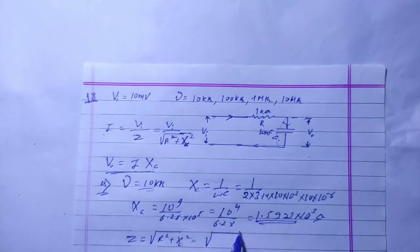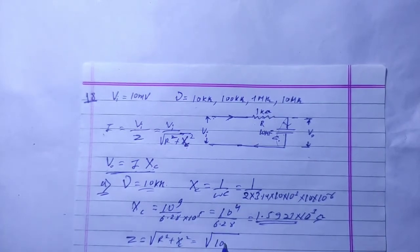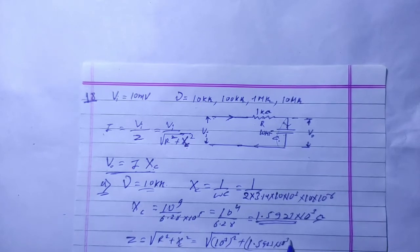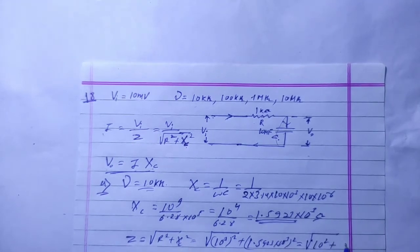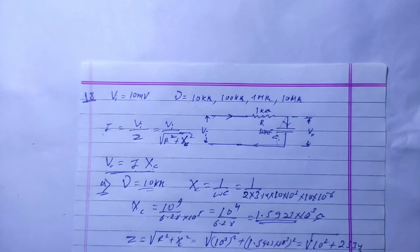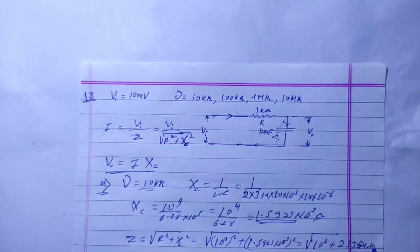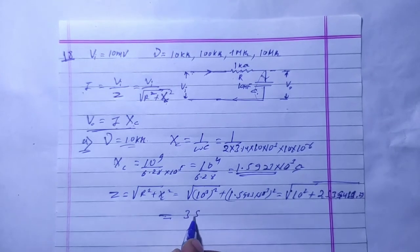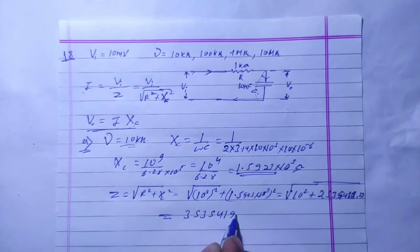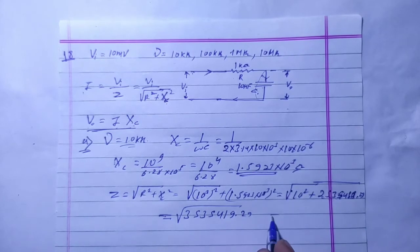R is 1 kilo ohm, i.e., 10 to the power 3. So R squared is 10 to the power 6. XC is 1.5923 into 10 to the power 3, and XC squared is approximately 2535.419. Adding inside the root: 10 to the power 6 plus 2535419 gives approximately 3535419.29. Taking the square root gives Z.